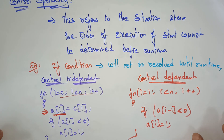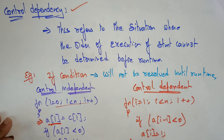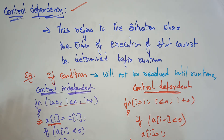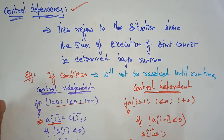So this is about control dependency. Control dependence always avoids parallelism from being exploited. The important point to remember: compiler techniques or hardware branch prediction techniques are needed to get around the control dependency in order to exploit more parallelism. That is the main concept here — in order to exploit more parallelism, these compiler techniques or hardware branch prediction techniques are needed to get around the control dependency.